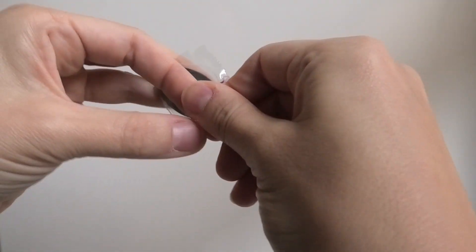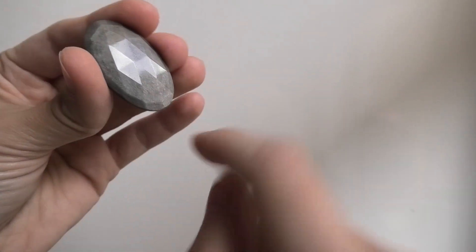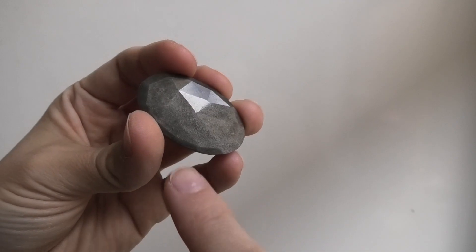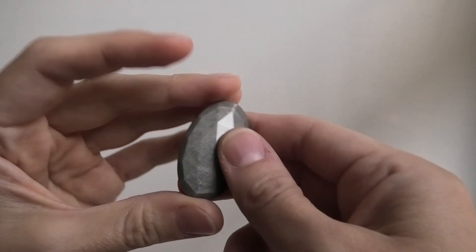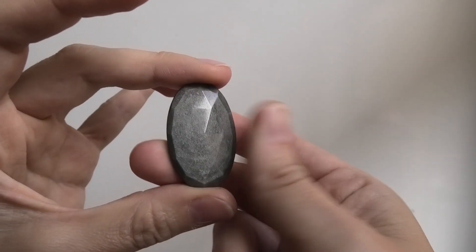And this, oh I can tell what this is. This is a faceted, you can see the little facets on it shining there, silver sheen obsidian. Oh, I really like this one. Look at that shine. So pretty.